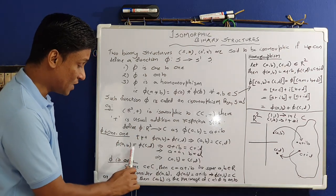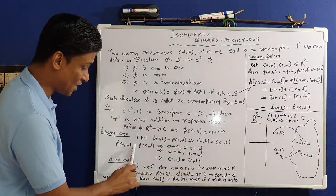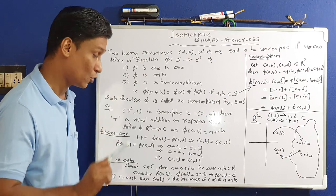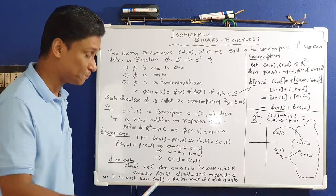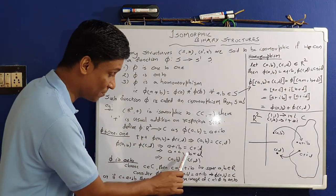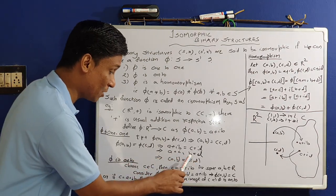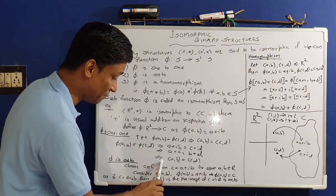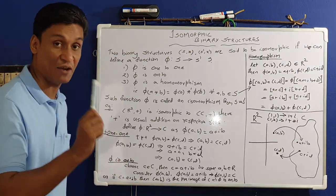Suppose φ(a, b) = φ(c, d). By definition, φ(a, b) = a + ib and φ(c, d) = c + id. So a + ib = c + id. Since a + ib and c + id are complex numbers and they are equal, their real parts and imaginary parts must be equal. That obviously implies a = c (real part) and b = d (imaginary part). Therefore (a, b) = (c, d), which means φ(a, b) = φ(c, d) implies (a, b) = (c, d). So the mapping φ is a one-to-one mapping.